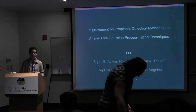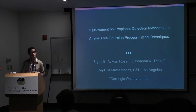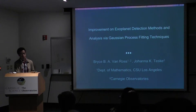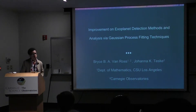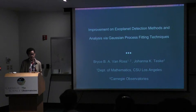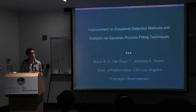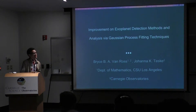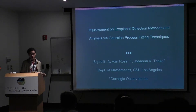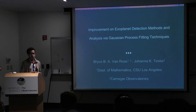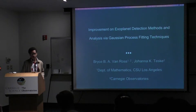Hello everyone. My name is Bryce Van Ross. It's been a pleasure working here at Carnegie Observatories with Dr. Johanna Tuske. A major difficulty in detecting exoplanets is disentangling stellar signals from the actual planets themselves. To help solve the puzzle, we applied Gaussian process analysis techniques to signals that we know actually come from the stars. This technique is a relatively new application in the field of astronomy.